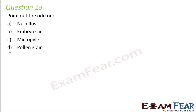Question number 28: Point out the odd one — nucellus, embryo sac, micropyle, and pollen grain. Nucellus, embryo sac, and micropyle are all parts of the ovule — they are parts of the female reproductive structure. Pollen grain, however, is the male gametophyte. So pollen grain is the odd one out.